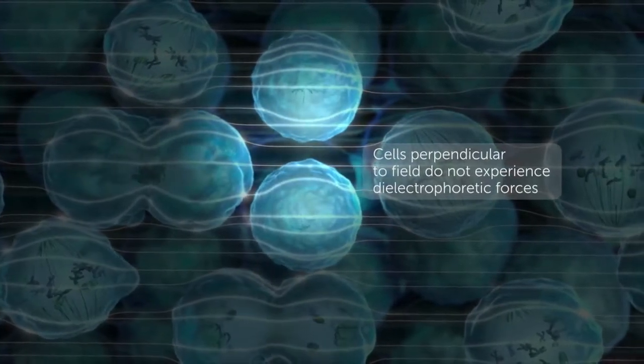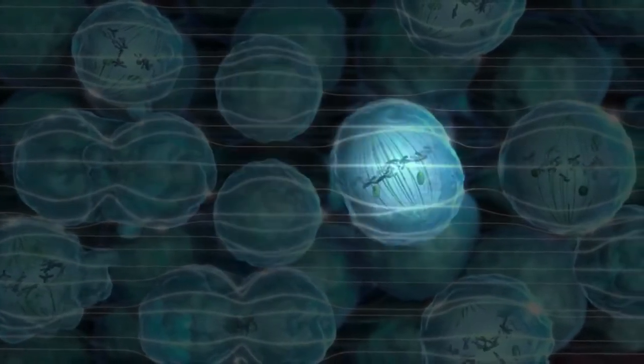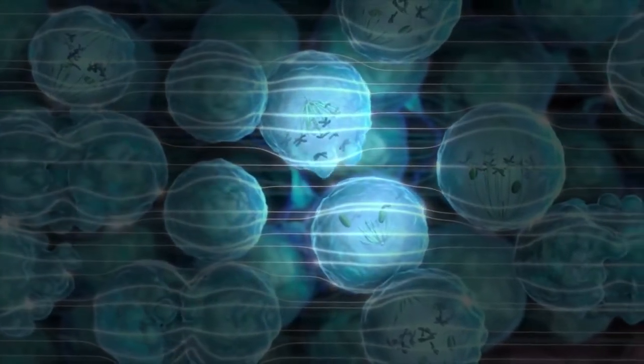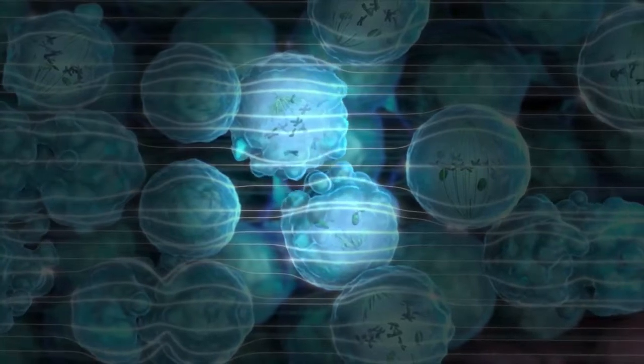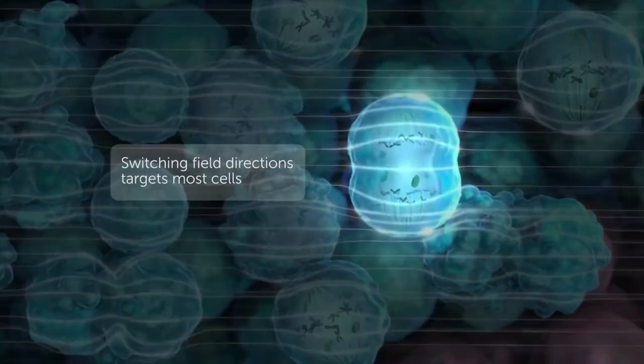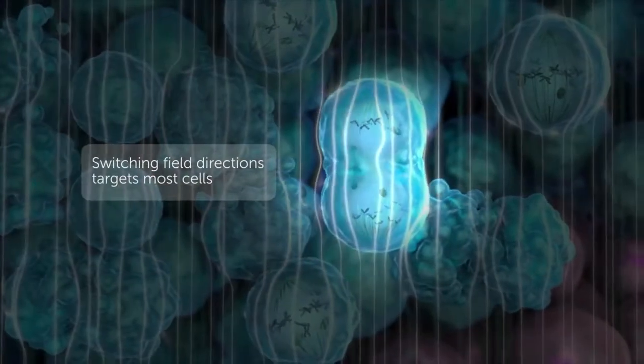Because cells divide in all directions, TT fields are delivered through two pairs of transducer arrays that generate perpendicular fields within the treated tumor. Cycling the field between these two directions ensures that a maximal range of cell orientations is targeted.